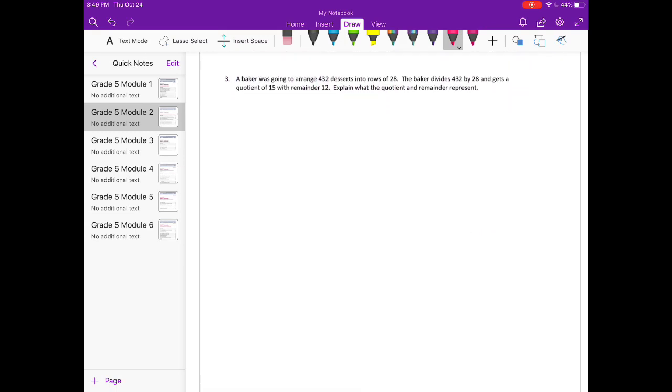Number 3. A baker was going to arrange 432 desserts into rows of 28. The baker divides 432 by 28 and gets a quotient of 15 with a remainder of 12. Explain what quotient and remainder represent. So they're arranging desserts into rows of 28. And so that means that there's going to be 28 desserts in each row. So we're going to have 15 rows of dessert. And there will be 12 desserts left over that won't make a whole other row.